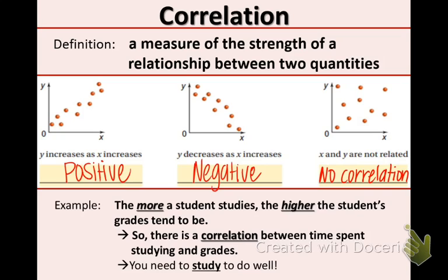So you want to identify which one is positive, negative, or no correlation. And below, you may be wondering, what is an example of this? Well, this is a really helpful example for all of you. The more a student studies, the higher the student's grades tend to be. So there is a correlation between the time spent studying and grades. It would actually be a positive correlation because as the number of hours of studying increases, the higher the grade is. So the lesson for this is you need to study and actually take good notes and try your best.